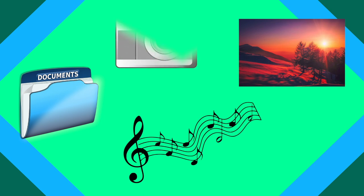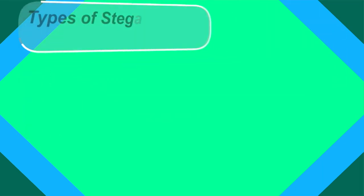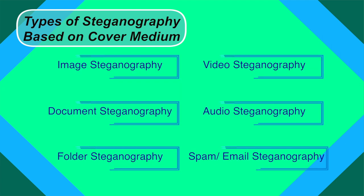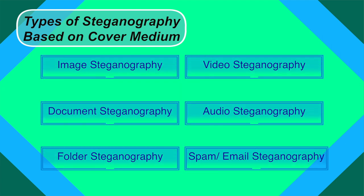We can hide data in any medium — text, images, audio, video, etc. Steganography can be classified on the basis of cover medium as: image steganography, document steganography, folder steganography, video steganography, audio steganography, and spam or email steganography.